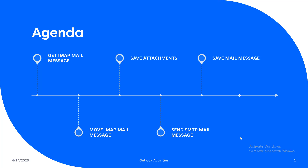So in our agenda, first of all, we will see how we can use the Get IMAP Mail Message activity to read email messages from the Gmail account. Then we will see how we can use the Save Attachment activity to save attachments. After that, we will see how we can use the Save Mail Messages activity to save mail messages. Then we'll see how we can use the Move IMAP Mail Message activity to move emails from one folder to another in Gmail. At the end, we will see how we can use the Send SMTP Mail Message activity to send email to recipients.